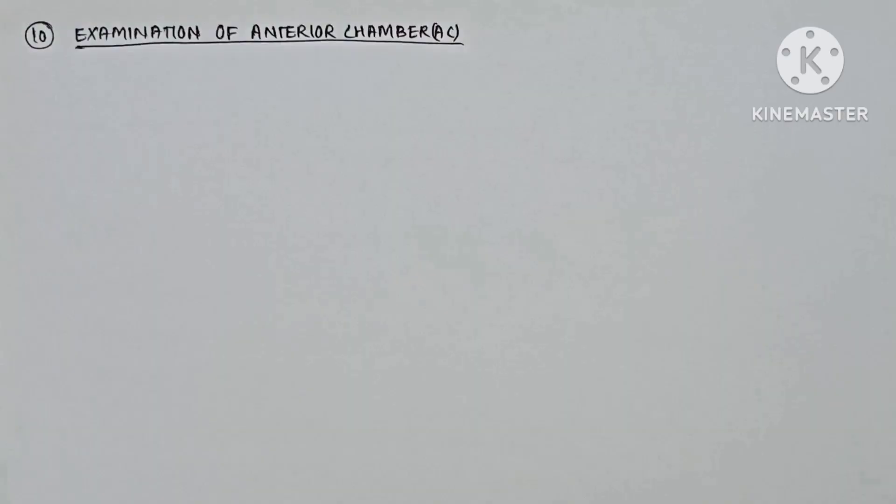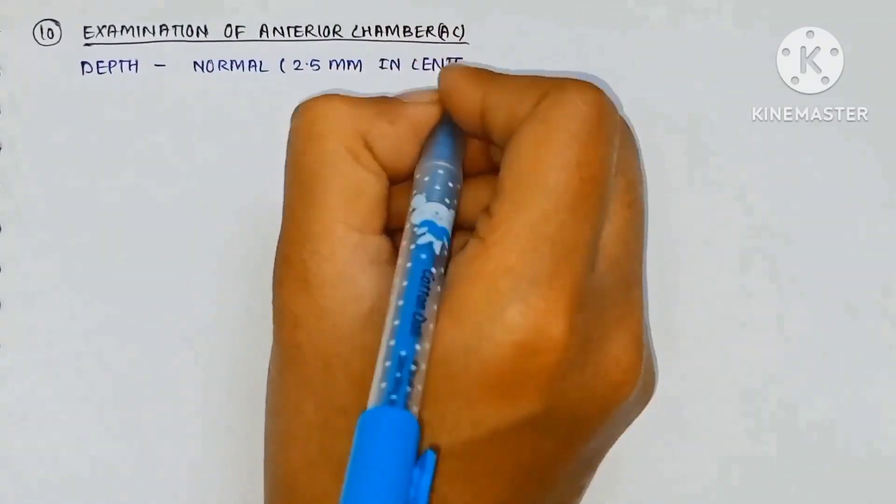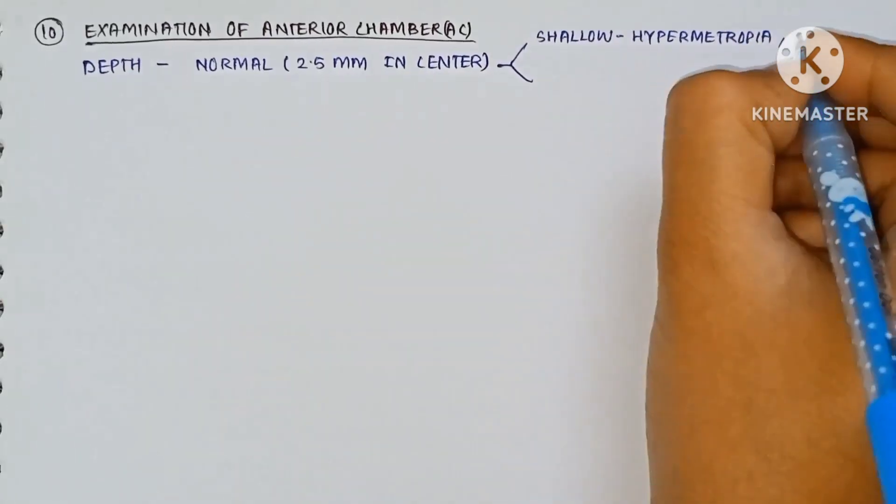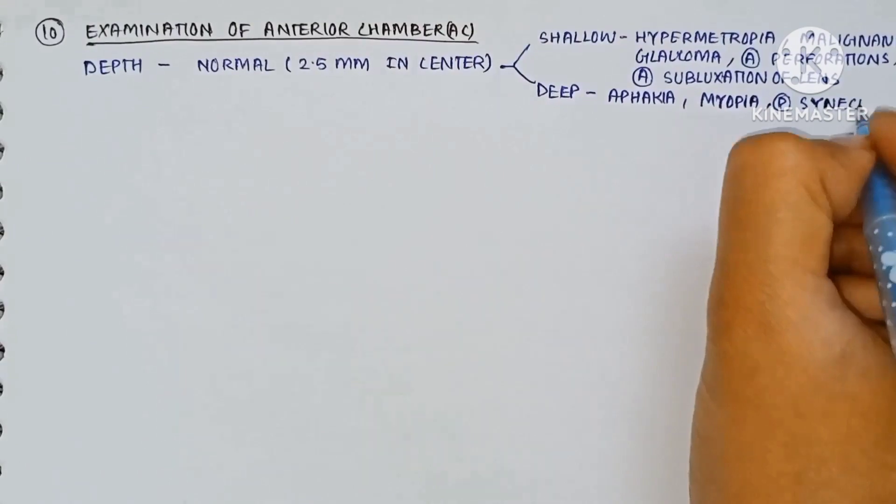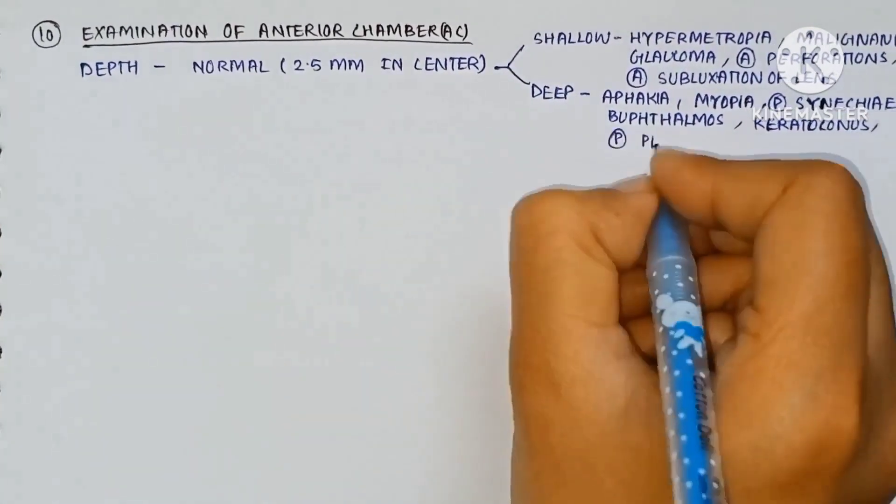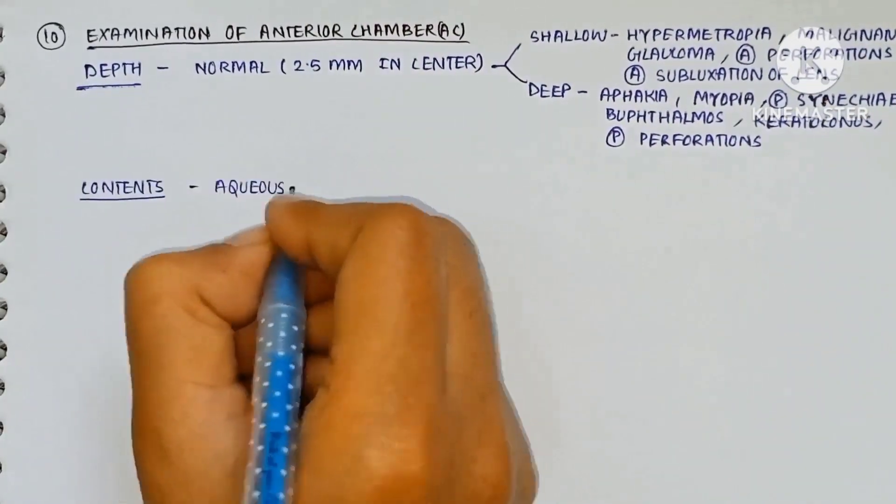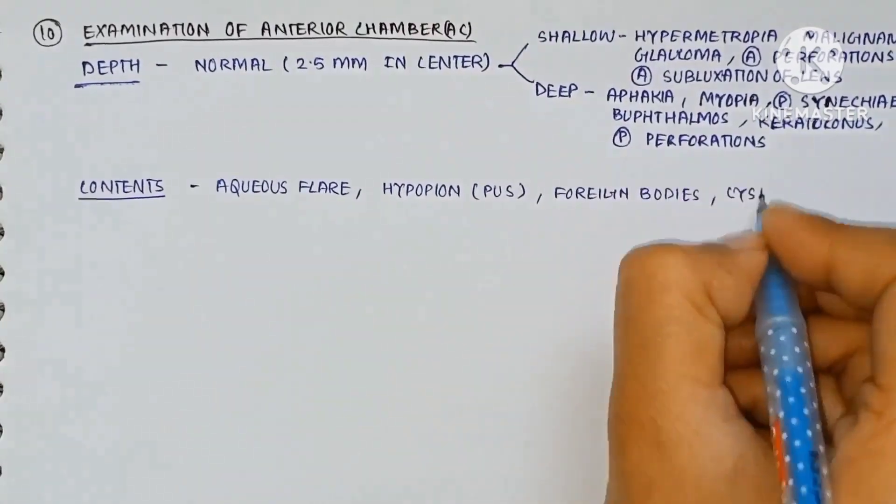The examination of the anterior chamber. The depth of the AC is normal, 2.5 mm in the center. Shallow in hypermetropia, melanoma, glaucoma, anterior perforation, anterior subluxation of lens. Deep in phakic myopia, posterior synechia, buphthalmos, keratoconus, posterior perforation. The abnormal content may be vitreous flare, hypopyon, foreign body, crystalline lens, blood and cyst.